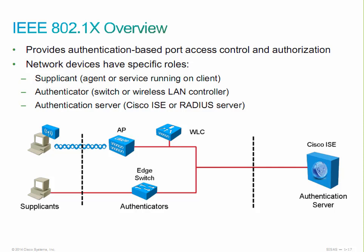With 802.1X port-based authentication, the supplicant provides credentials — a name, password, digital certificate, or secondary authentication — to the authenticator. The authenticator forwards those credentials to the authentication server for verification. If the authentication server determines the credentials are valid, the supplicant is allowed to access resources on the protected side of the network. The authenticator communicates to the authentication server using RADIUS or Diameter, passing those extensible authentication protocol messages.